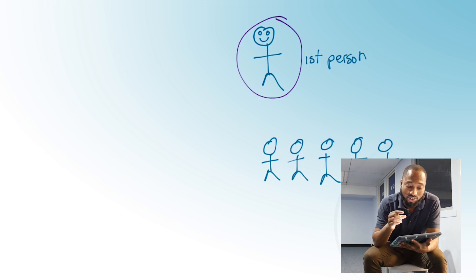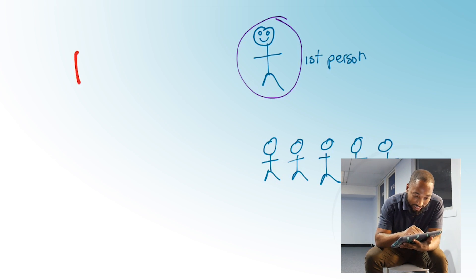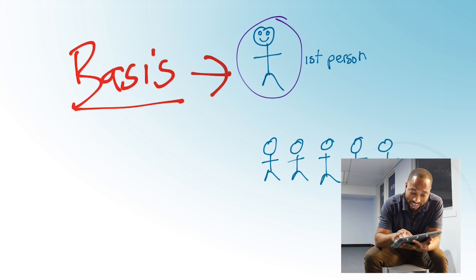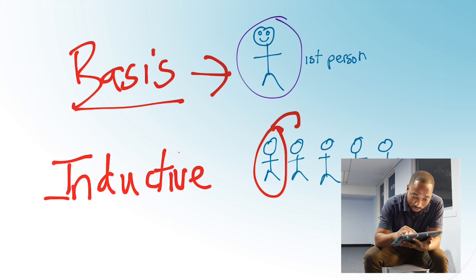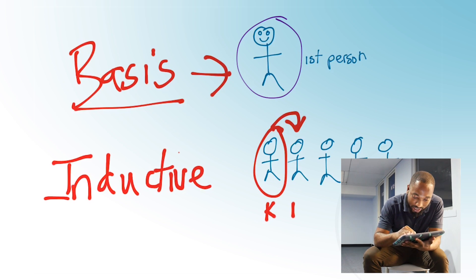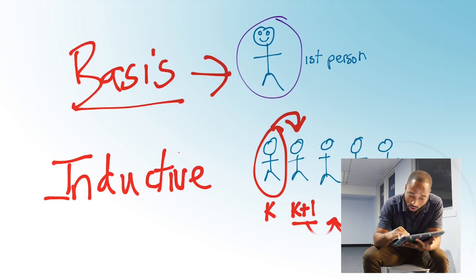Pure maths students, I really want you to understand that all induction is doing is proving for the first event that the statement is true — we'll call that the basis. Then we use an inductive step to show that if one is true then the next one must be true. So if we call this person k, if k is true then the person that comes after k will have to be k+1, then that is true. And that would mean that if k+1 is true then k+2 is also true, because k+1+1 is 2, and so on.